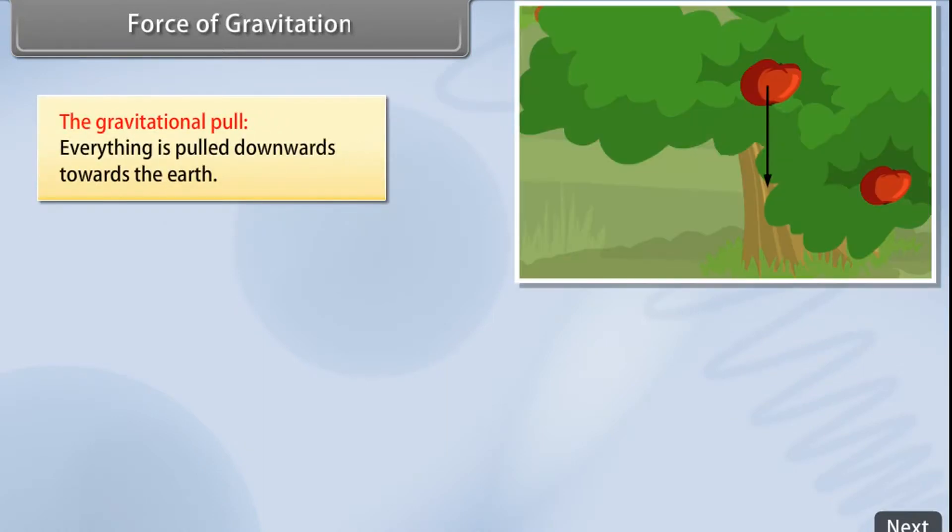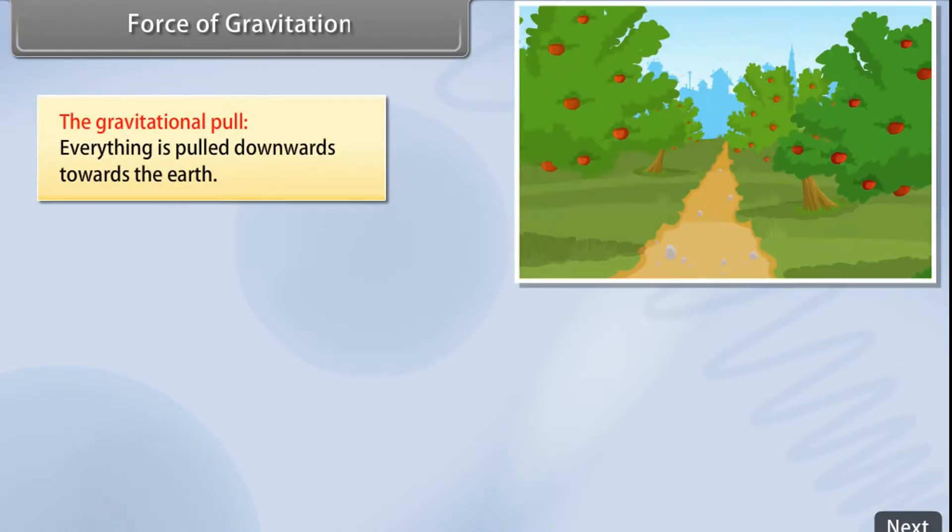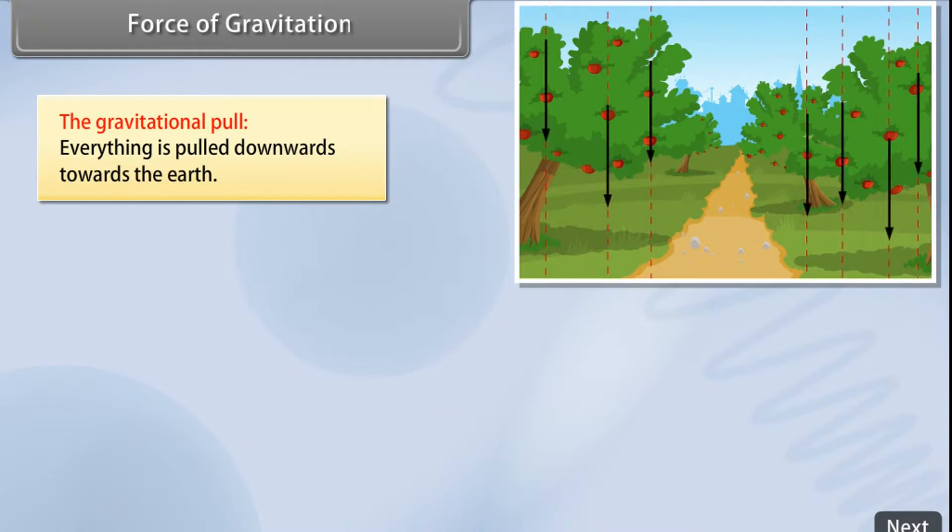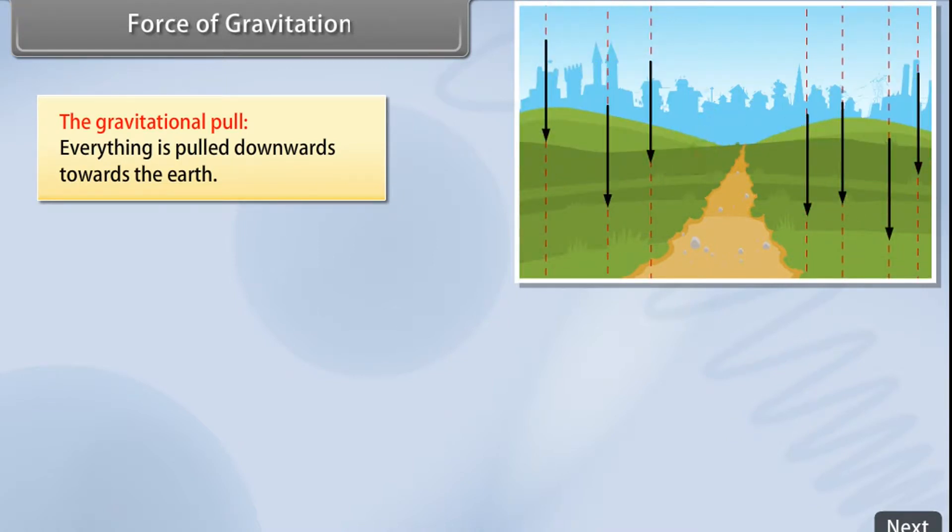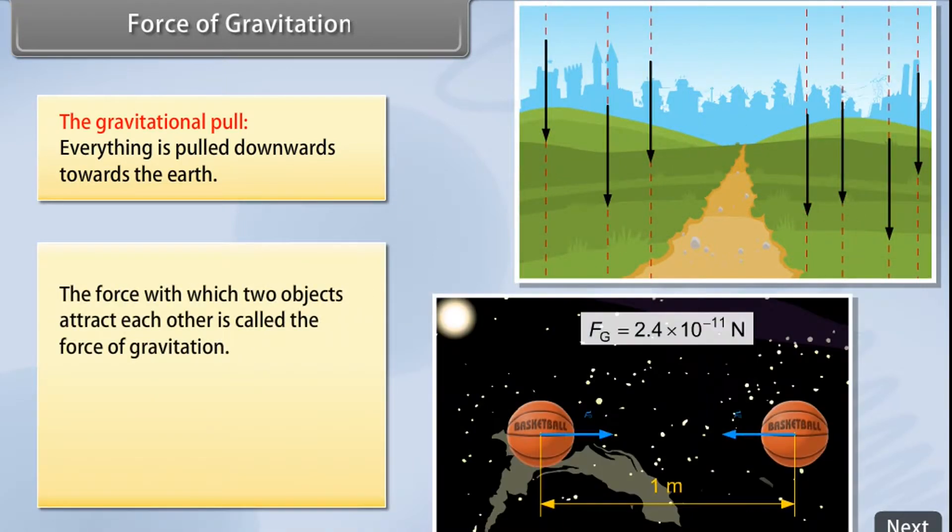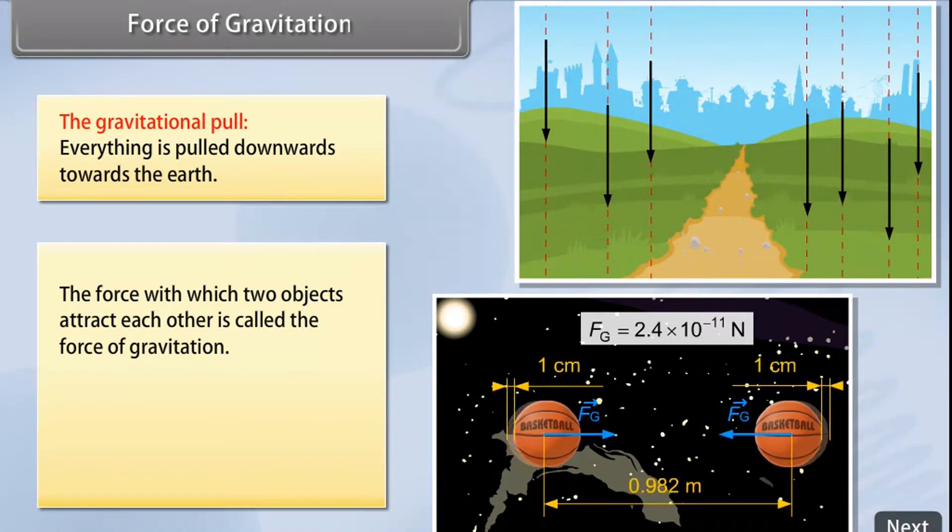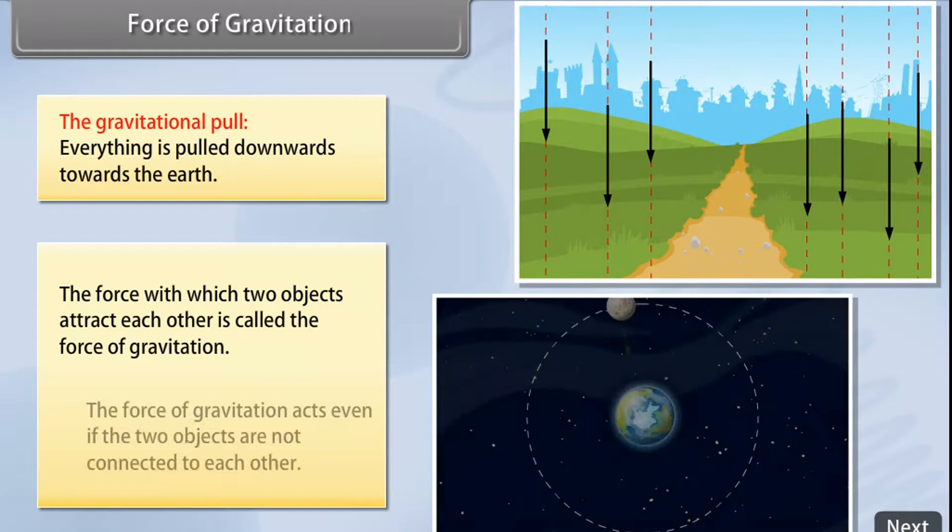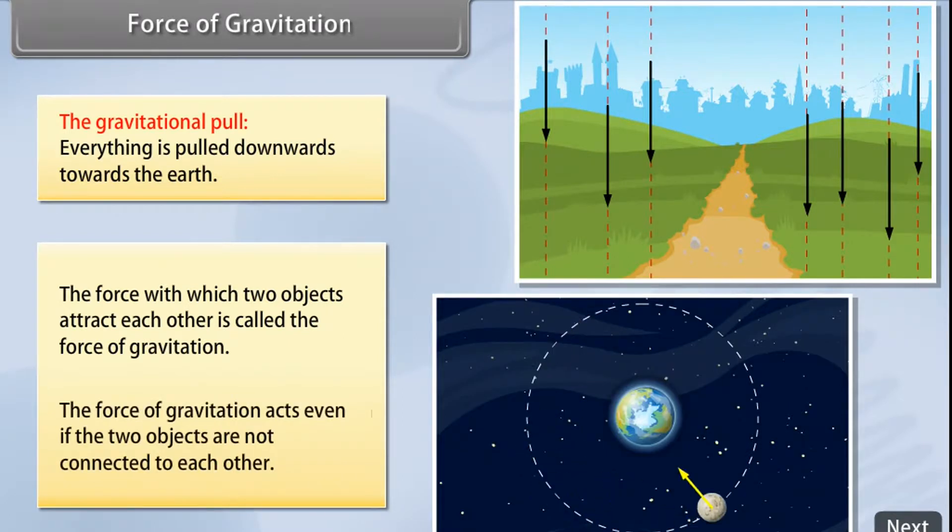The gravitational pull. Everything is pulled downwards towards the earth. The force with which two objects attract each other is called force of gravitation. The force of gravitation acts even if the two objects are not connected to each other.